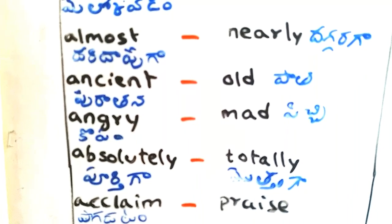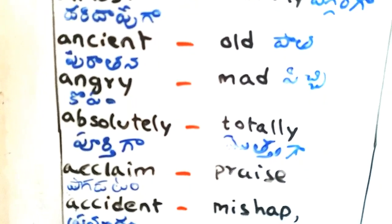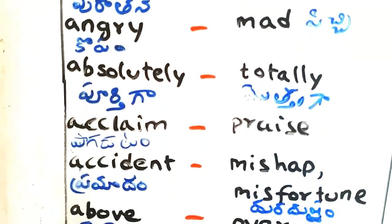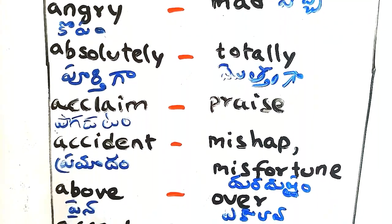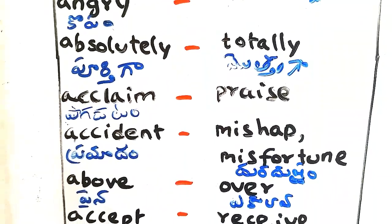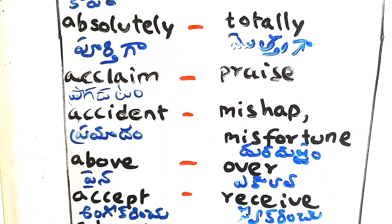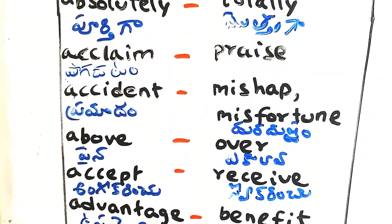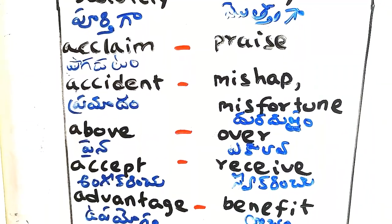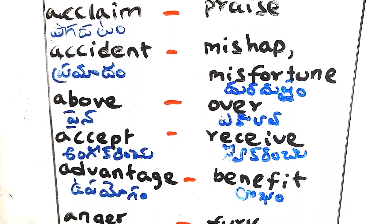Ancient - purathana, old. Angry - coopam, mad. Absolutely - pootiga, totally. Acclaim - powerdom, prize. Accident - pramadam, mishap, misfortune. Above - paina, over.